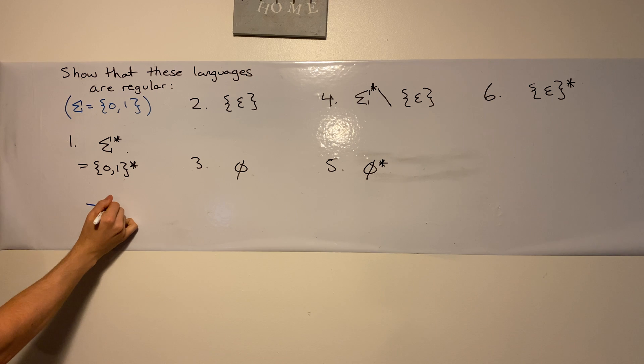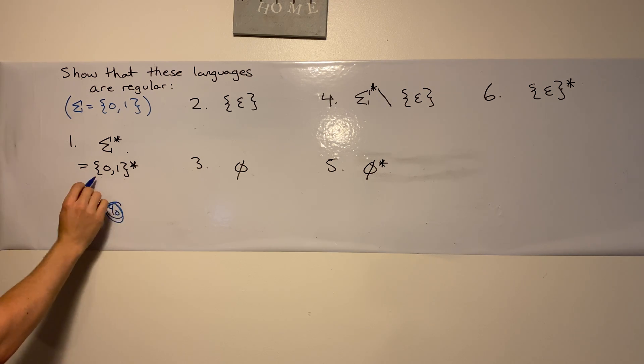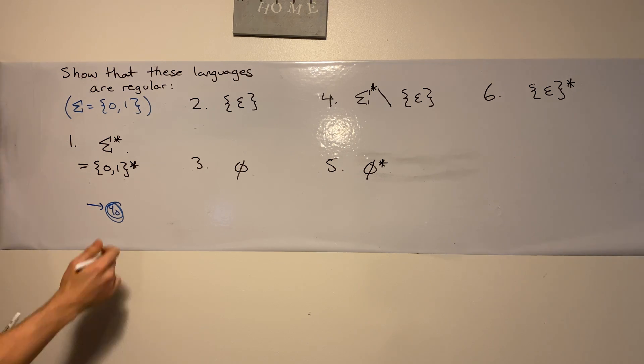So our DFA then is quite simple. We have a start state and it has to be an accept state because the empty string is always in the star of any language. And here we can just self loop on zero and one.